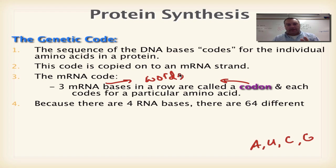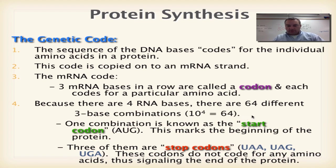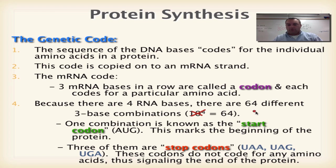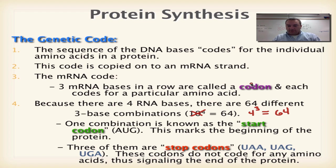If we have a four-letter alphabet and we're only allowed to make three-letter words, how many total words can you have? It's going to be 64. Four to the third equals 64. So we can only have 64 different codons.